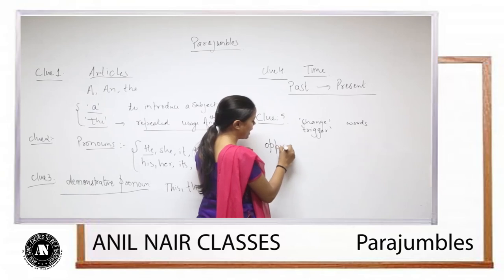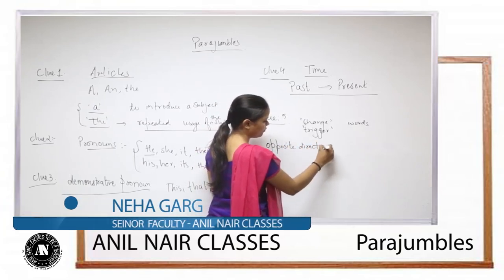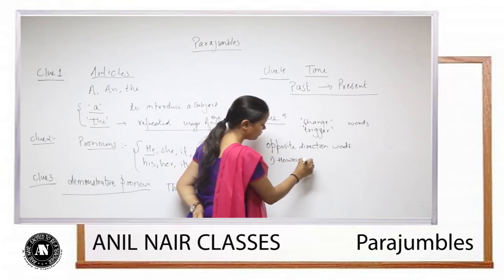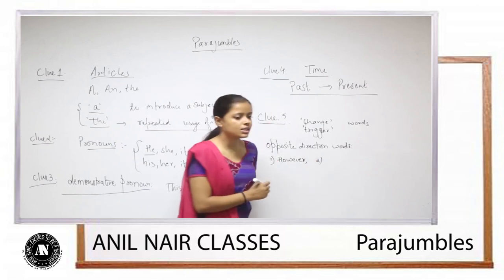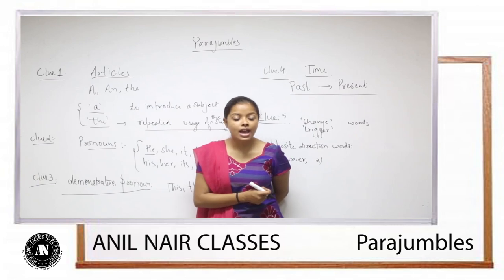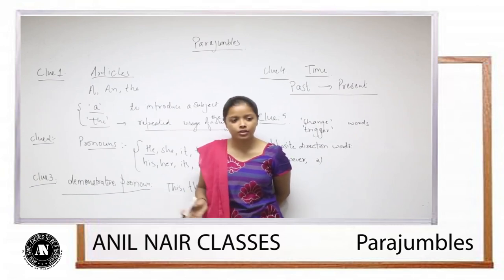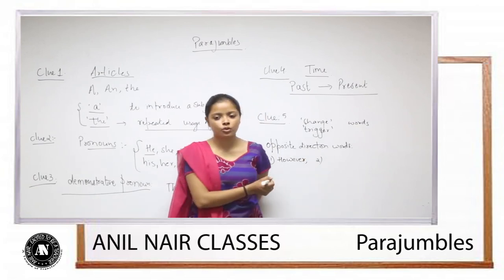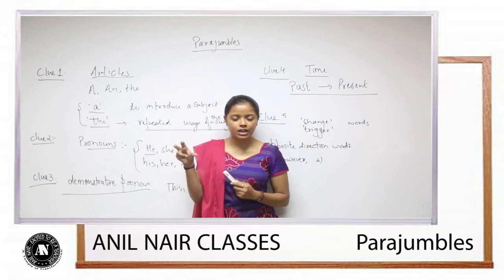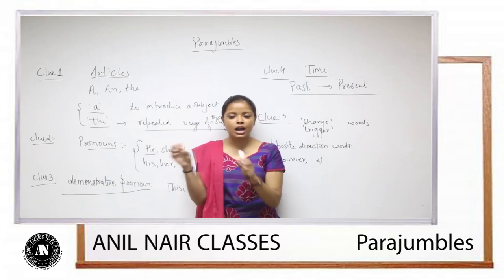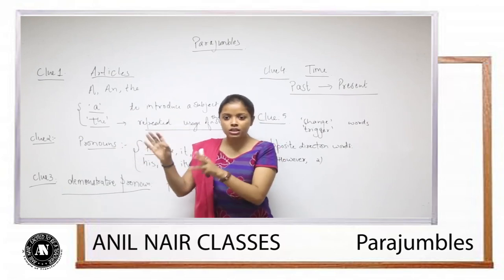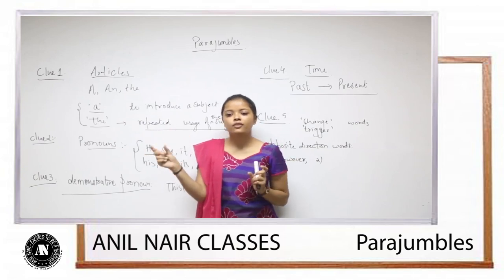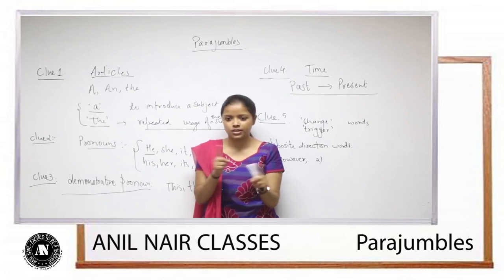Or as we call them, opposite direction words. Now these opposite direction words — when I say the building's architecture is very exceptionally good, but or however, then you know that now I will say something negative about the building. So such is the help of these clues: they help you to know which part of the paragraph to put first. So if it says 'however', whatever part comes after it, the before part should be opposite to it. It helps you to know which information to put first and which to put second if there are two contrast markers.